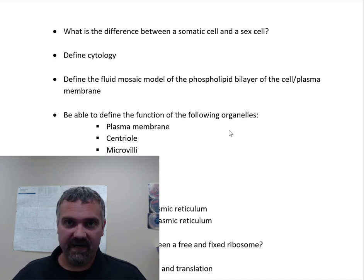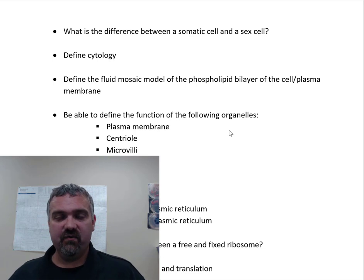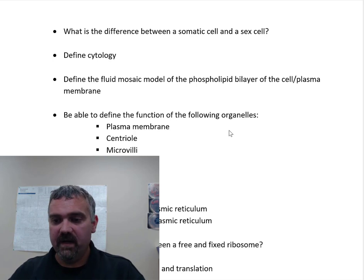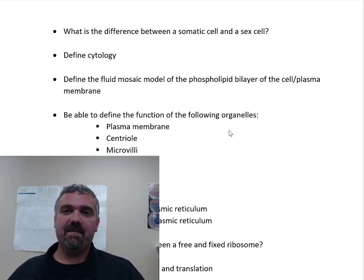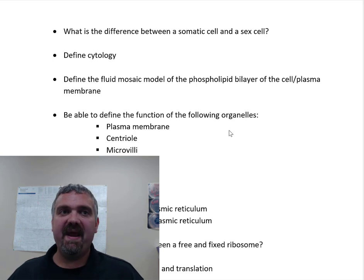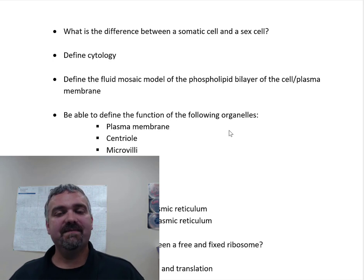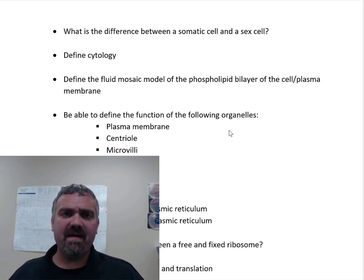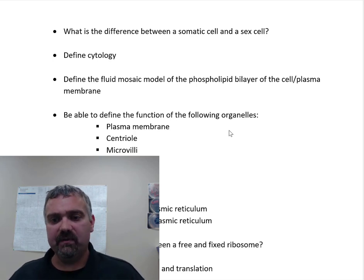A sex cell is going to be haploid — it only has one set of chromosomes. So a sperm and an egg each have 23 chromosomes. A somatic cell, a body cell, or even a fertilized egg — that zygote — will have two sets of 23, or 46 chromosomes. I generally say two sets of chromosomes. Men are XY, so we don't have a pair of X chromosomes. You would say somatic cells are 2N and sex cells are N or 1N — diploid versus haploid.